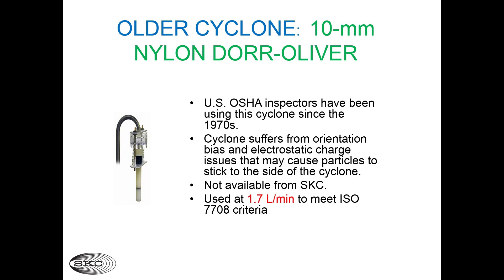One of the first respirable dust cyclones to be used in industrial hygiene is the 10 mm nylon Dor Oliver cyclone. In the US, this cyclone has been used since the 1970s by OSHA inspectors. It has long been reported that this cyclone suffers from orientation bias and electrostatic charge issues that may cause particles to stick to the side of the device. SKC does not sell this cyclone, but it is still commercially available from other vendors and is widely used. The designated flow rate to meet the ISO 7708 criteria with this cyclone is 1.7 liters per minute.